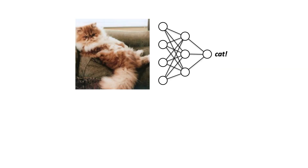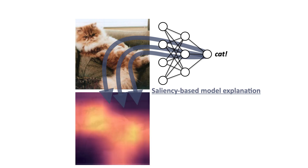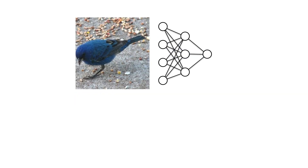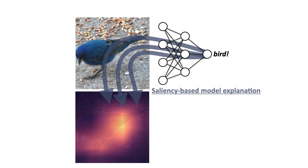For explainable AI, it is important to understand how humans perceive model explanations. Critical to an explanation is how it is communicated, yet the role of graphical perception on saliency-based explanations is unclear.